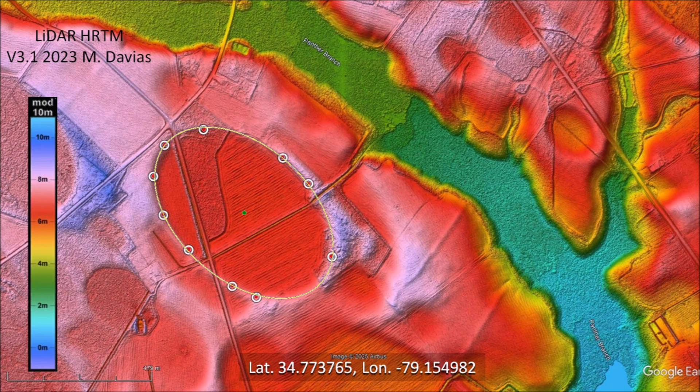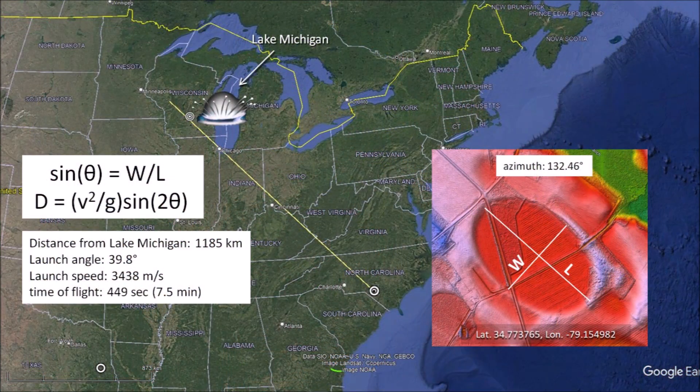The colorized topography by Michael Davias helps to distinguish the raised rims of the basins relative to the centers and brings out features that are lost in grayscale LiDAR. The azimuth of this Carolina Bay leads to the convergence point of 43.5 degrees north and 89.5 degrees west, determined by Davias and Gilbride in 2009.